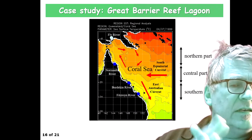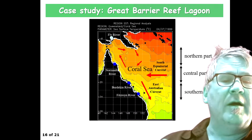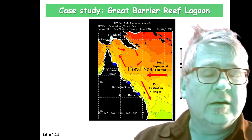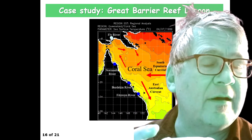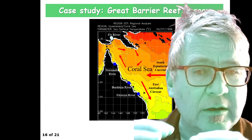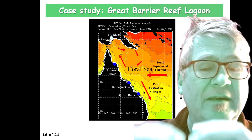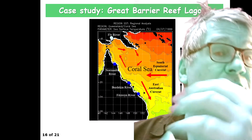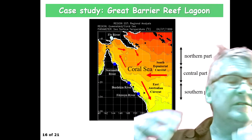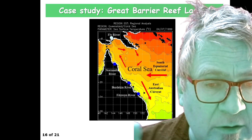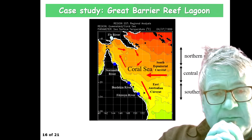Why it matters is because a marine heat wave only has a negative impact if it happens during the warmest time of the year, and only if it impacts species that can't tolerate this extra heat in the system. So it's actually good to know when you have the month of the warmest ocean.